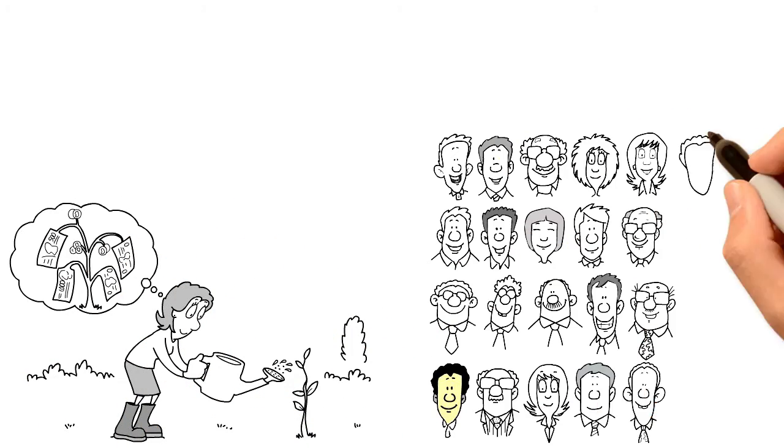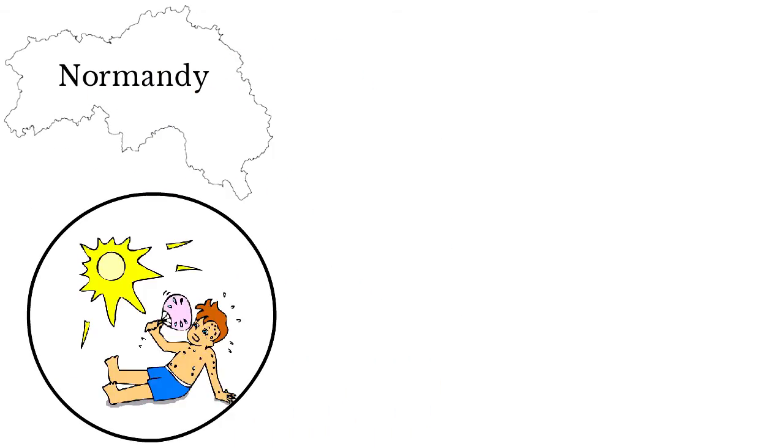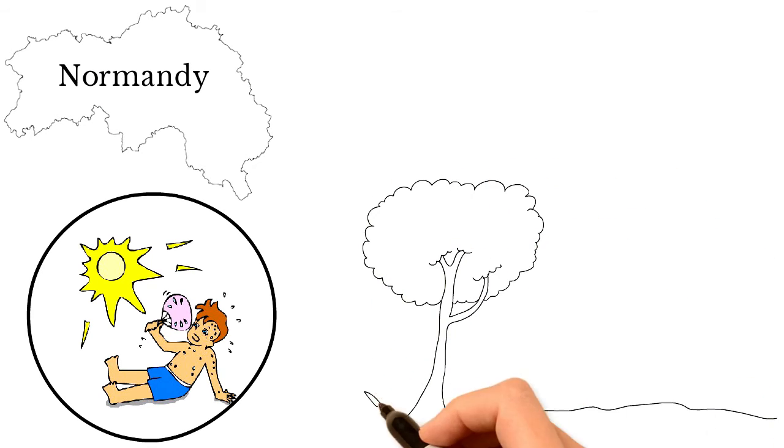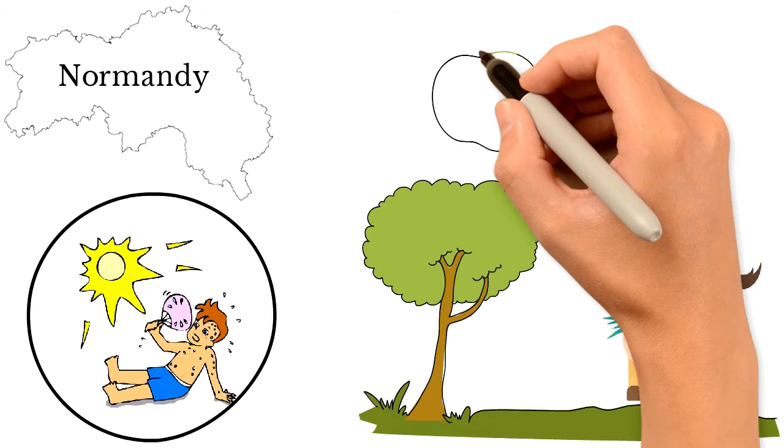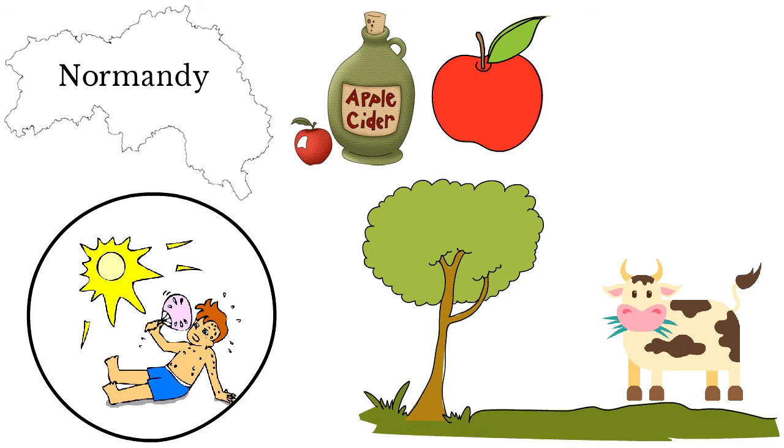Normandy has a damp climate because it's close to the Atlantic. Grass grows quickly in damp conditions, therefore dairy farming is important in Normandy. Normandy also specializes in apple production and the manufacture of cider. The soil here is rich in calcium due to the underlying limestone bedrock.